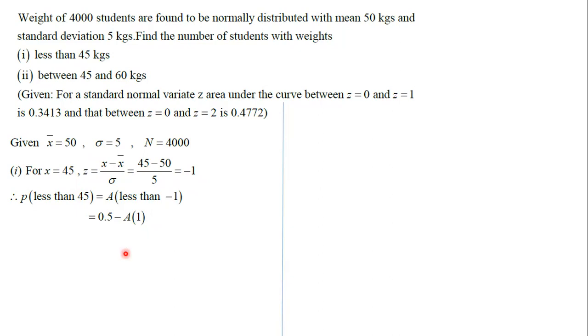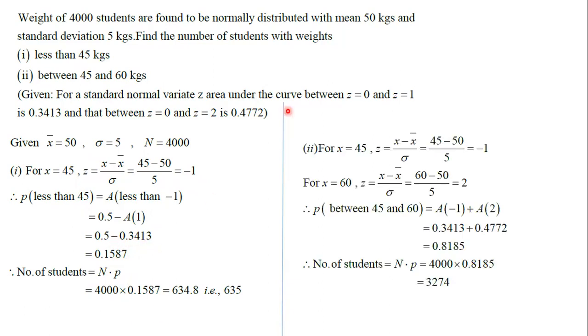We'll use the frequency for 1 as 0.3413, so that will be about 0.1587. Between 45 and 60, if we substitute these values here in place of x, this is -1 and +2. Add this frequency, that will be about 4000 times 0.8187, so the number of students will be there between the weight 45 to 60.